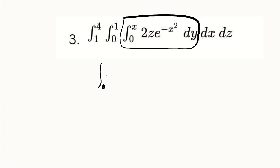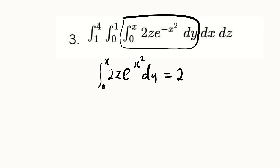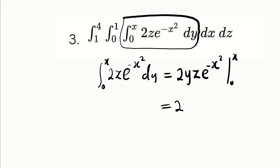We have the integral from 0 to x of the function 2z·e^(-x²) dy. The function is entirely a function of z and x, so we only multiply by y. This gives 2y·z·e^(-x²), evaluated from 0 to x. We substitute the upper bound — the lower bound makes everything zero. Wherever we see y we replace with x, giving us 2x·z·e^(-x²). This is our new function.